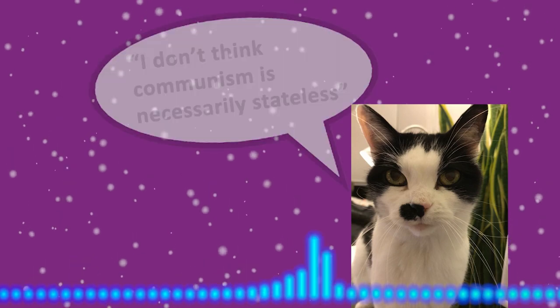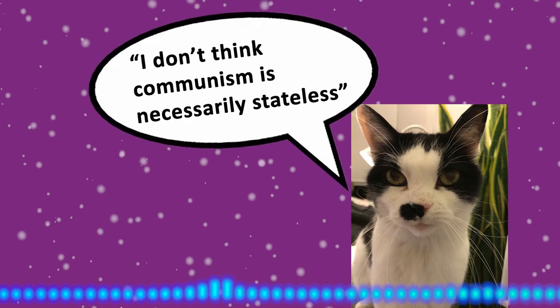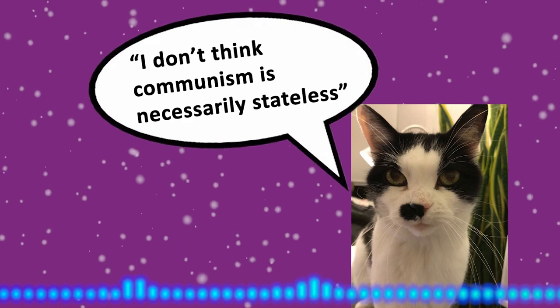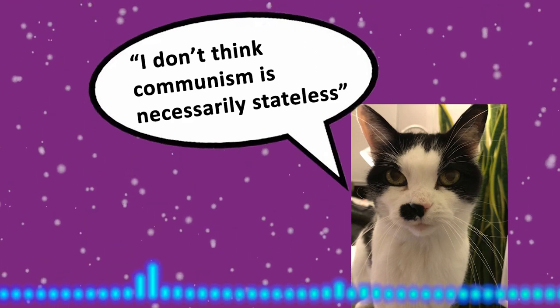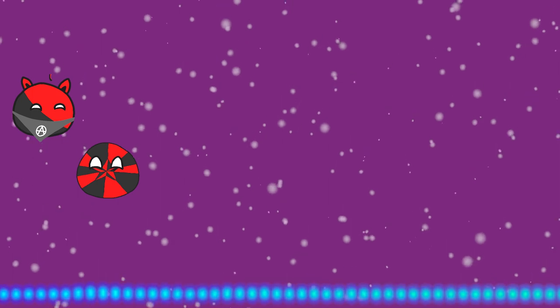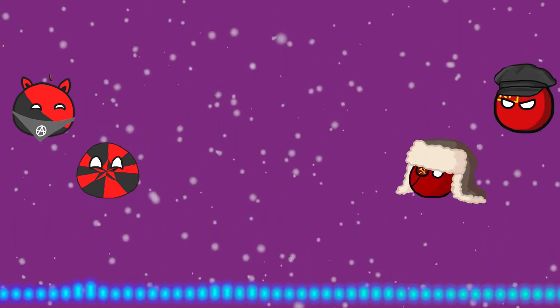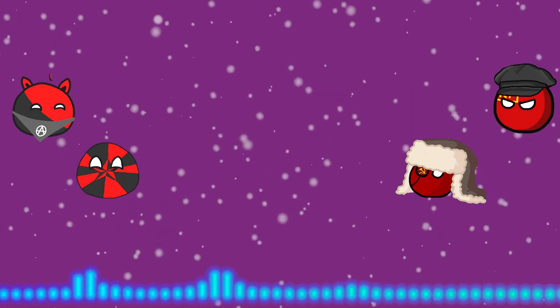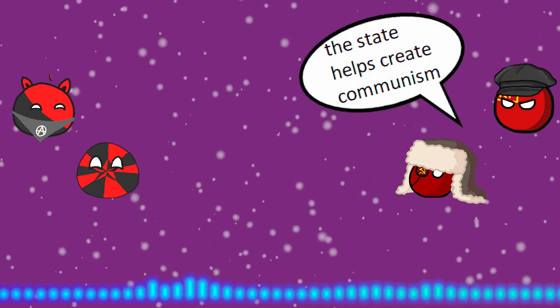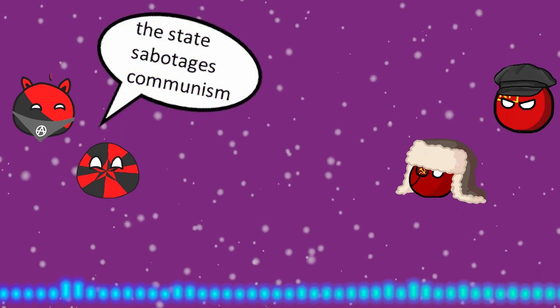Someone once said to me, I don't think communism is necessarily stateless, because anarcho-communists and libertarian communists are anti-state, so if communism is always stateless, then anarcho-communism and libertarian communism would be redundant. Well, all communists agree that communism is stateless, but anarcho-communists and libertarian communists believe the process of creating communism must be done without a state, while other types of communists believe the state is needed as a tool for creating communism. Some communists think the state will help create communism, but others think it will actually hurt the process.